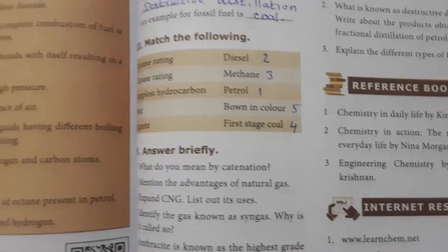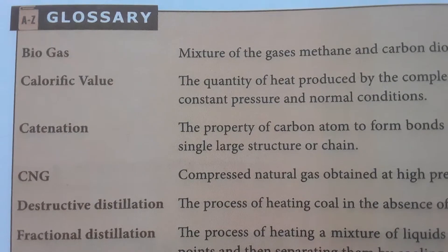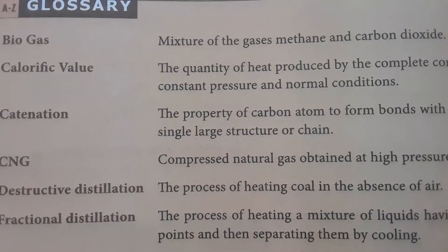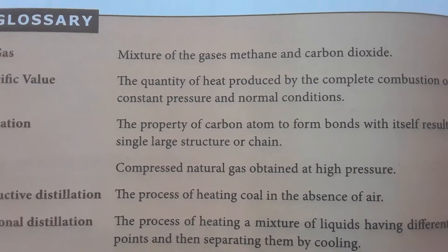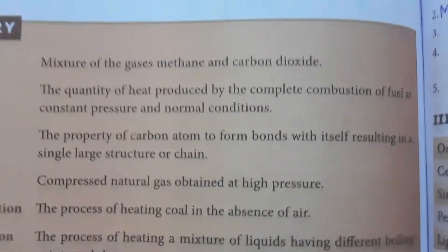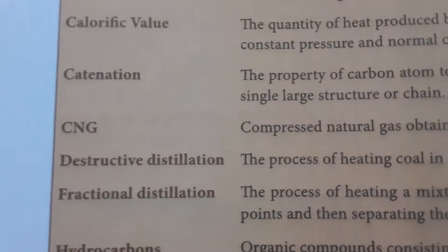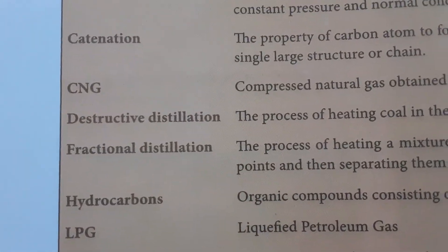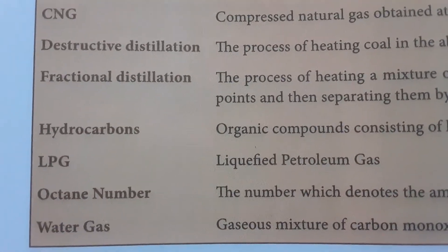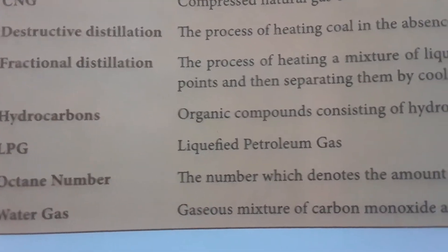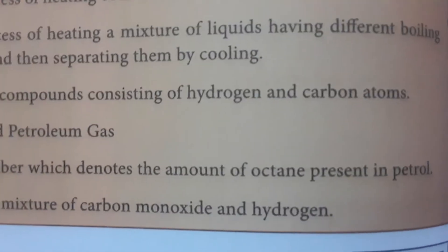Key glossary terms: Biogas is a mixture of methane and carbon dioxide. Calorific value is the quantity of heat produced by complete combustion of fuel at constant pressure under normal conditions. CNG stands for Compressed Natural Gas, LPG stands for Liquefied Petroleum Gas, and water gas is a mixture of carbon monoxide and hydrogen.